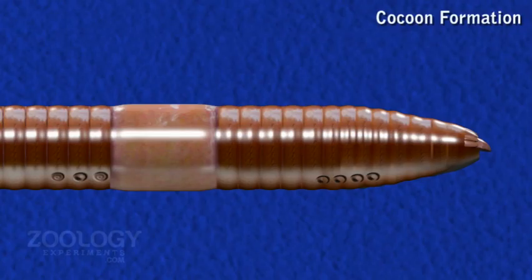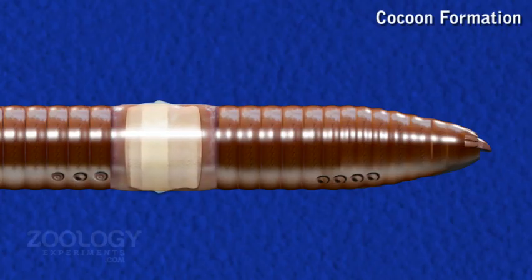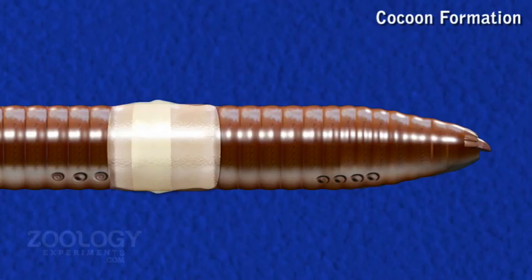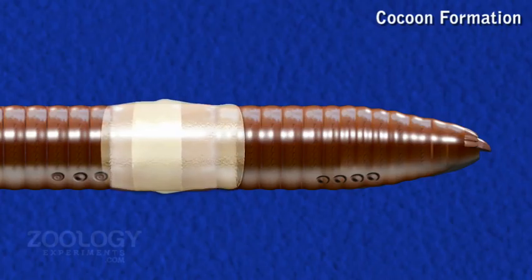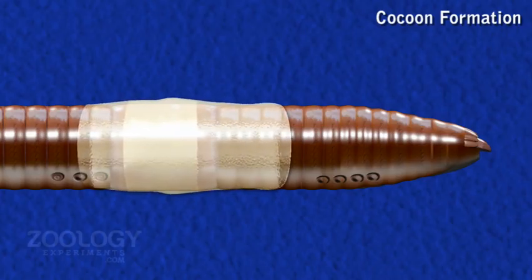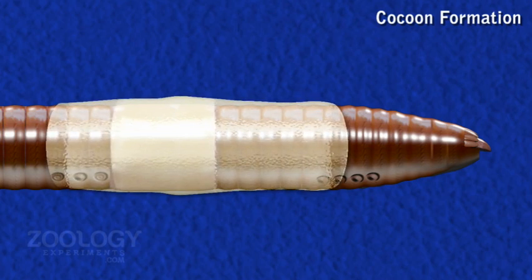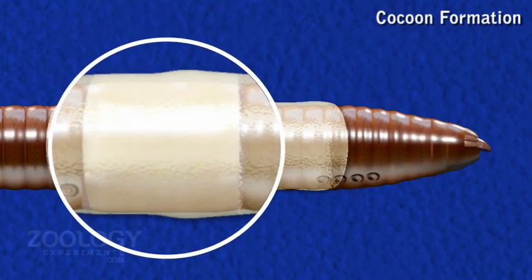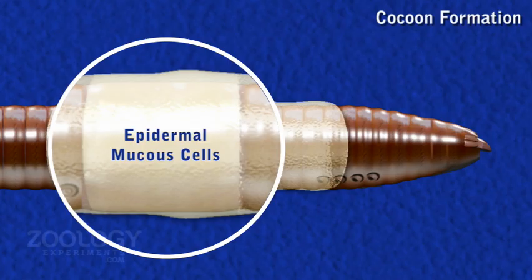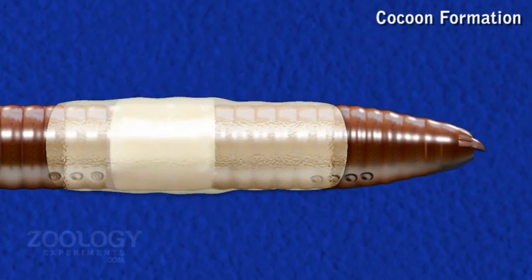The cocoon is secreted as a viscid and gelatinous substance by clitellum glands, forming a broad membranous stripe or belt around the clitellum. It hardens gradually on exposure to air into a tough but elastic tube, which becomes the cocoon or egg capsule. A slime tube is also secreted by epidermal mucous cells of the clitellum as the worm moves behind.